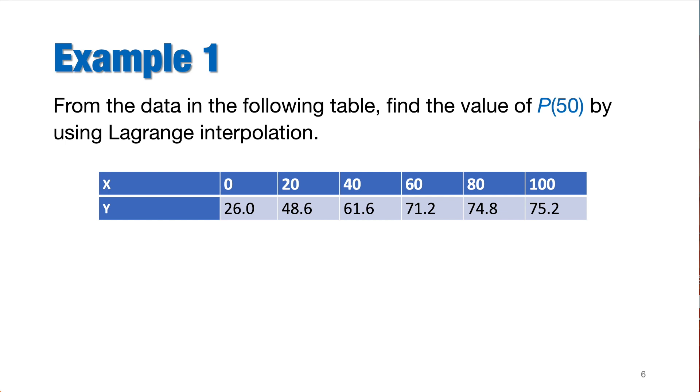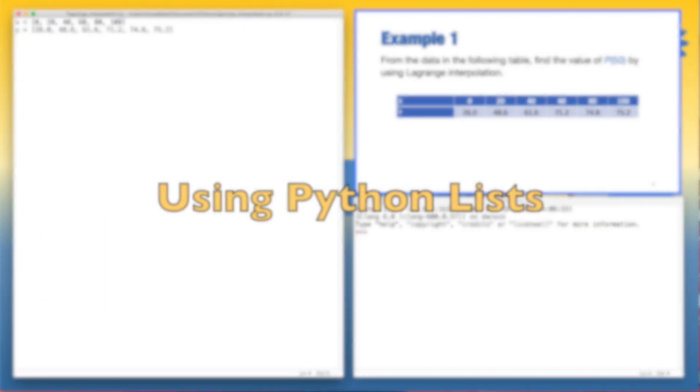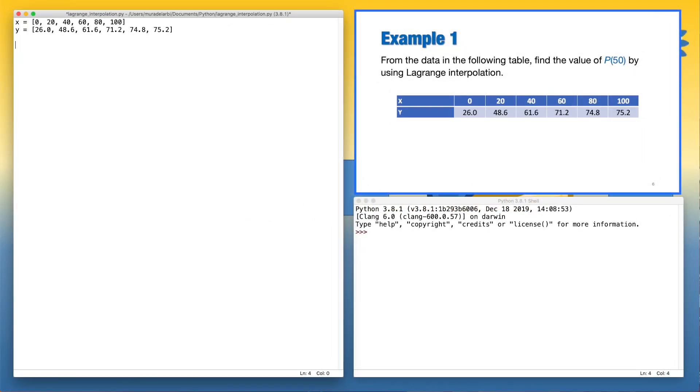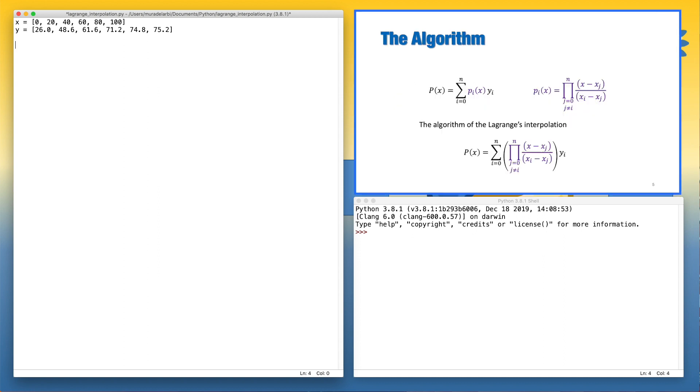We have the data table of values of x and y. We need to know the value of y when x is equal to 50. Here, we use Python lists for simplicity as the basic form of the Lagrange interpolation. Now, let's define the number of the data points. And we can define also the degree of the polynomial as m minus 1. Of course, we can use m, the number of data points, directly in our loops, but here, because the algorithms are defined with n, we use the degree of the polynomial. Now, let's define the x value here. So, we call xp equals 50.